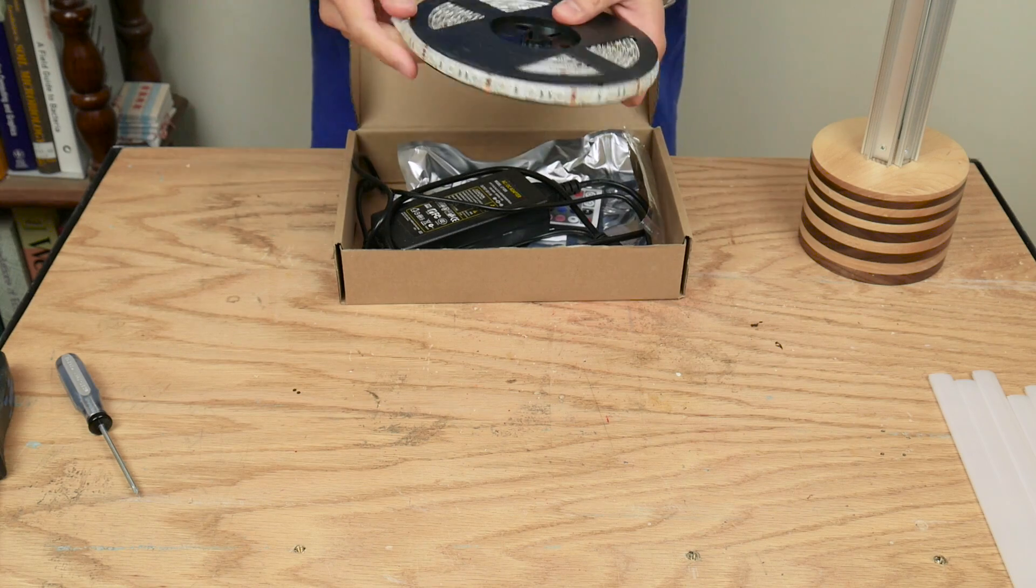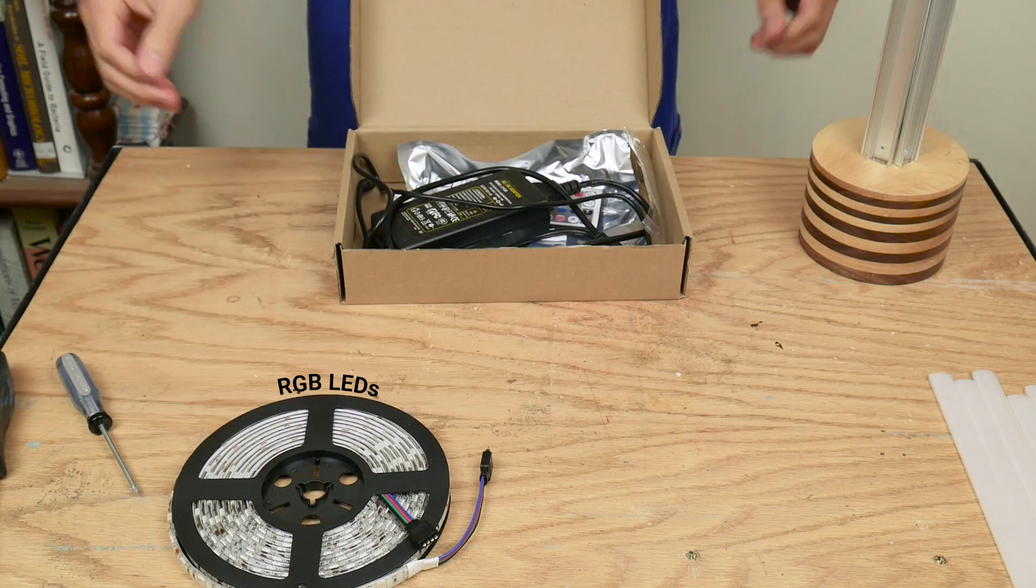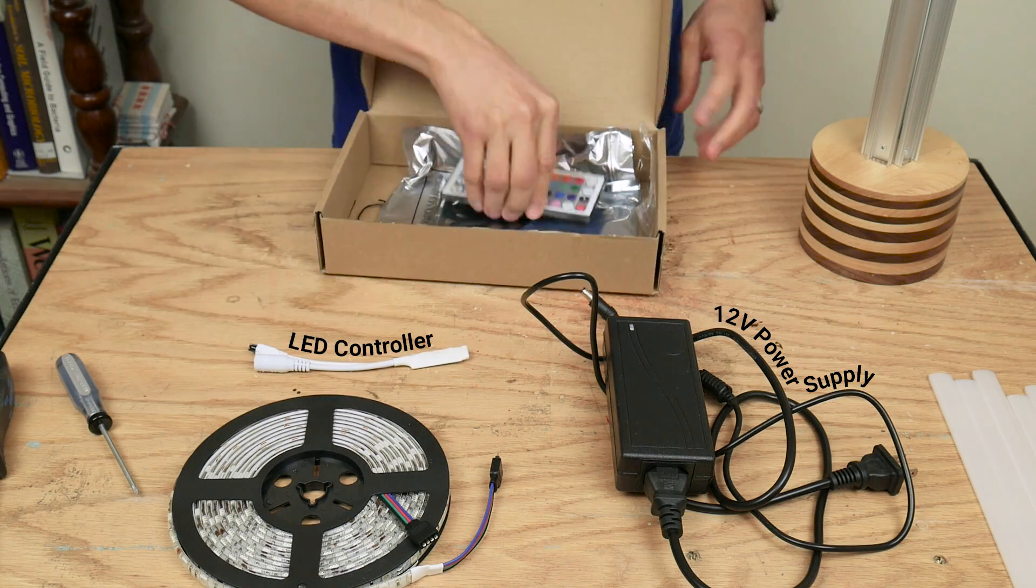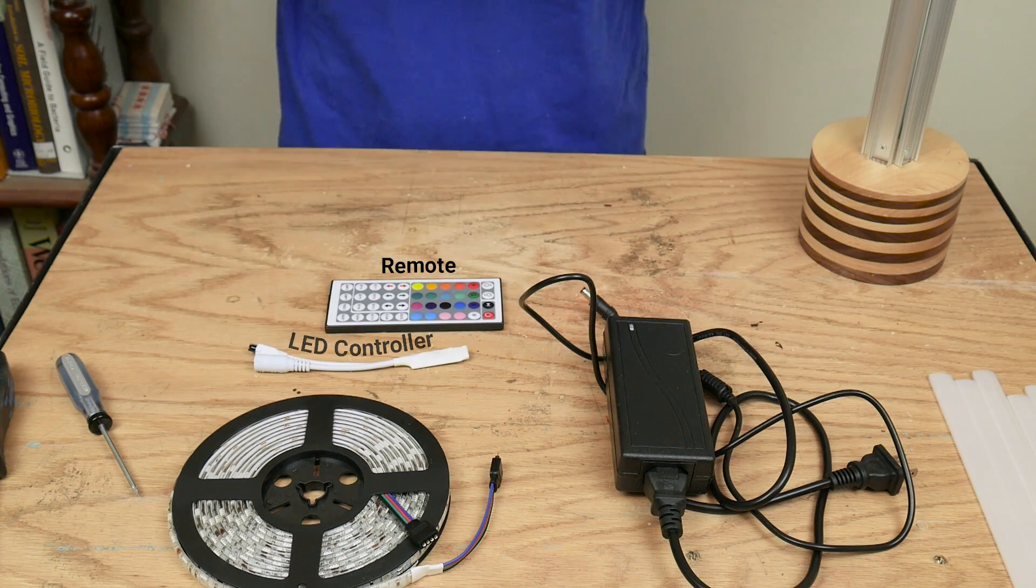The LED kit I used came with a strip of RGB LEDs, a power supply, an LED controller and a remote. There's a link below to this kit.